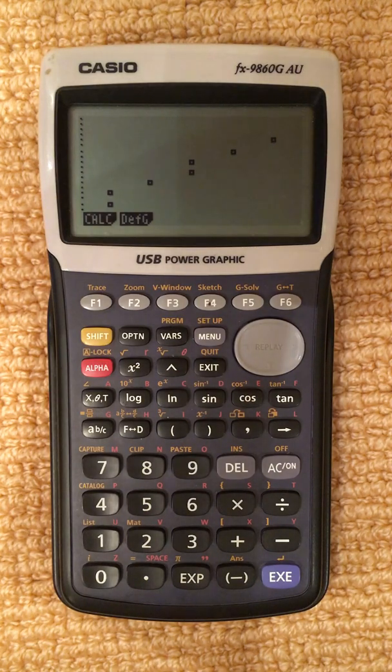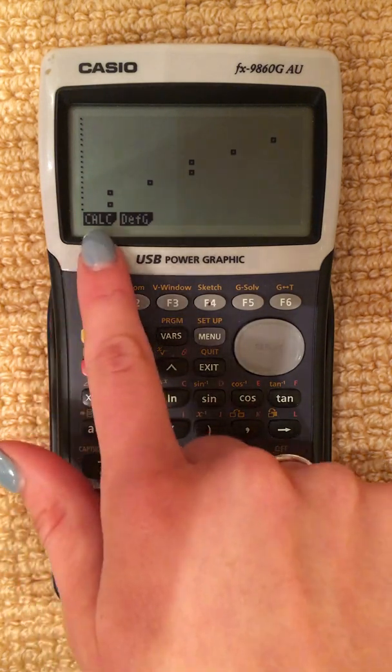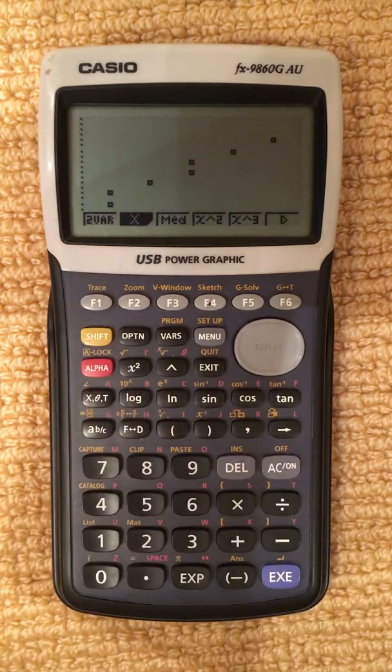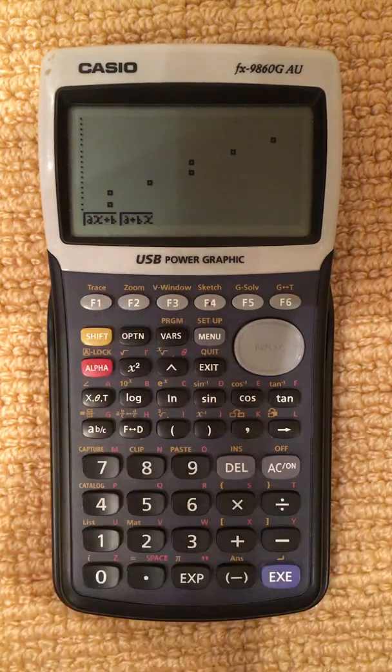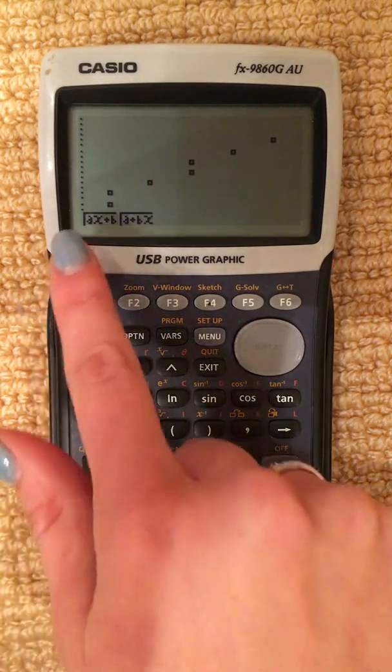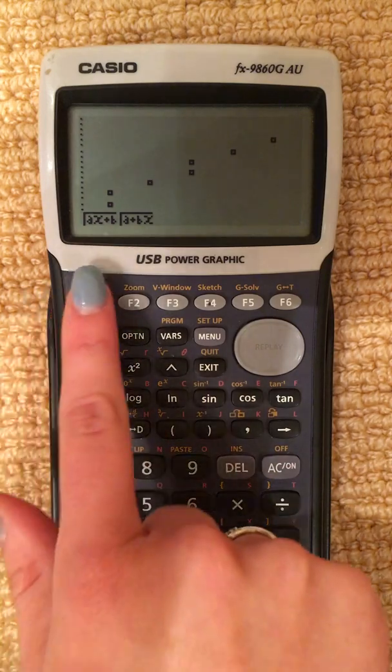Now if we want to find the line of best fit, Calculate F1. As it is a linear equation, we want to just look at X. Plane X, press F2. The equation we want is AX plus B, F1.